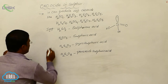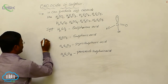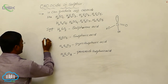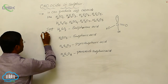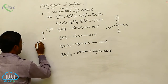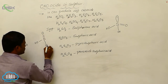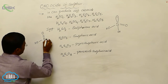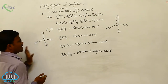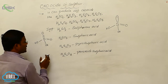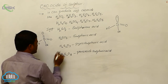The structure of sulphuric acid H₂SO₄ has sulphur with two double-bond O groups and two OH groups, again giving the same tetrahedral geometry.